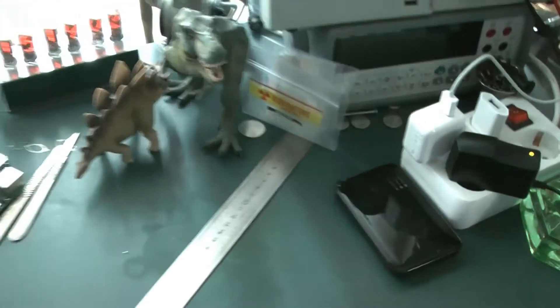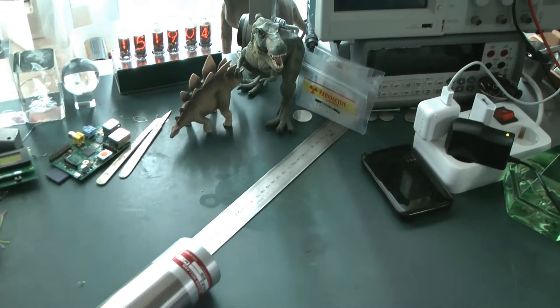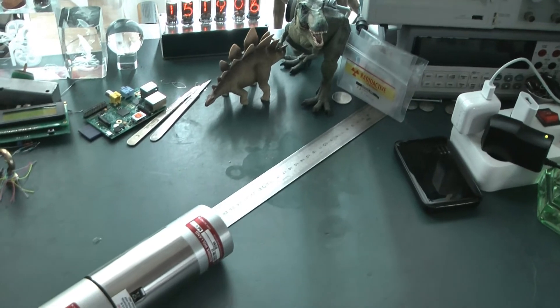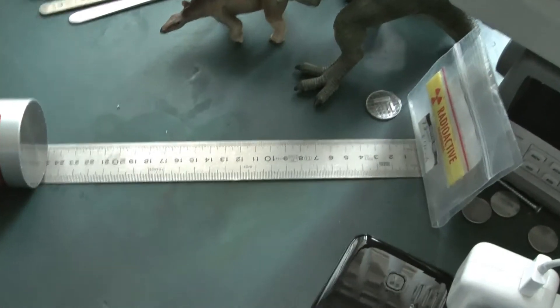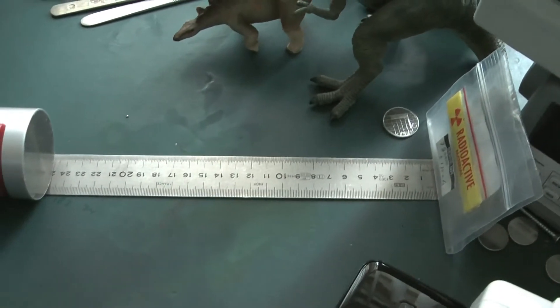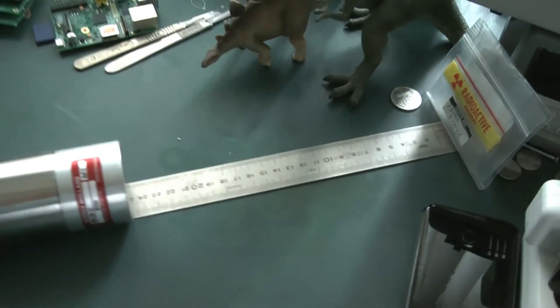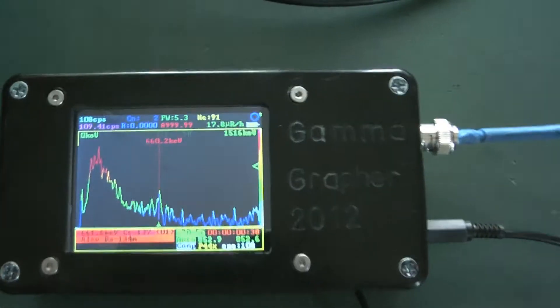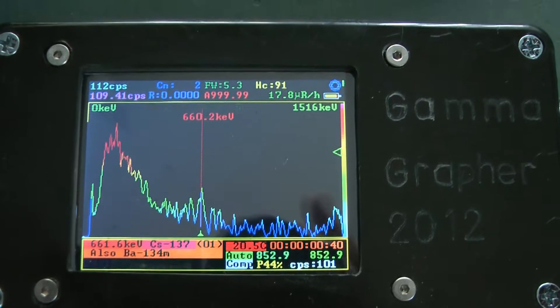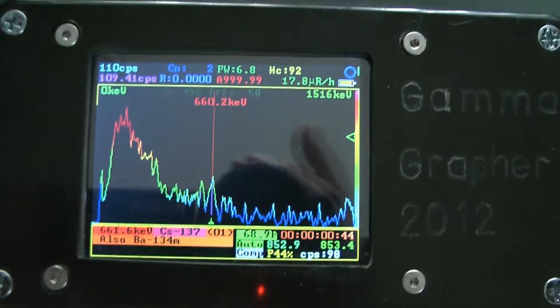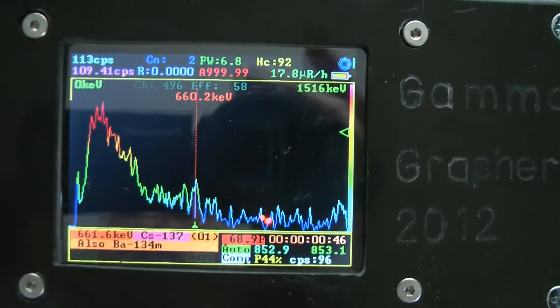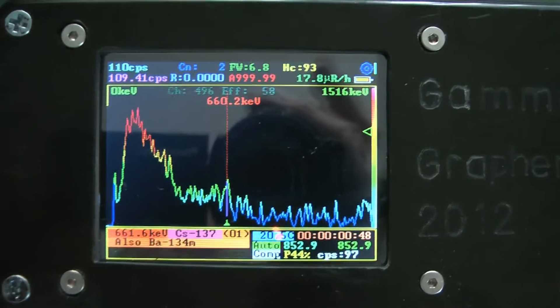The measurement is repeated with the soil at a distance of 25 centimeters from the scintillator. Even at this distance, within a minute, the characteristic peaks of the two isotopes are visible.